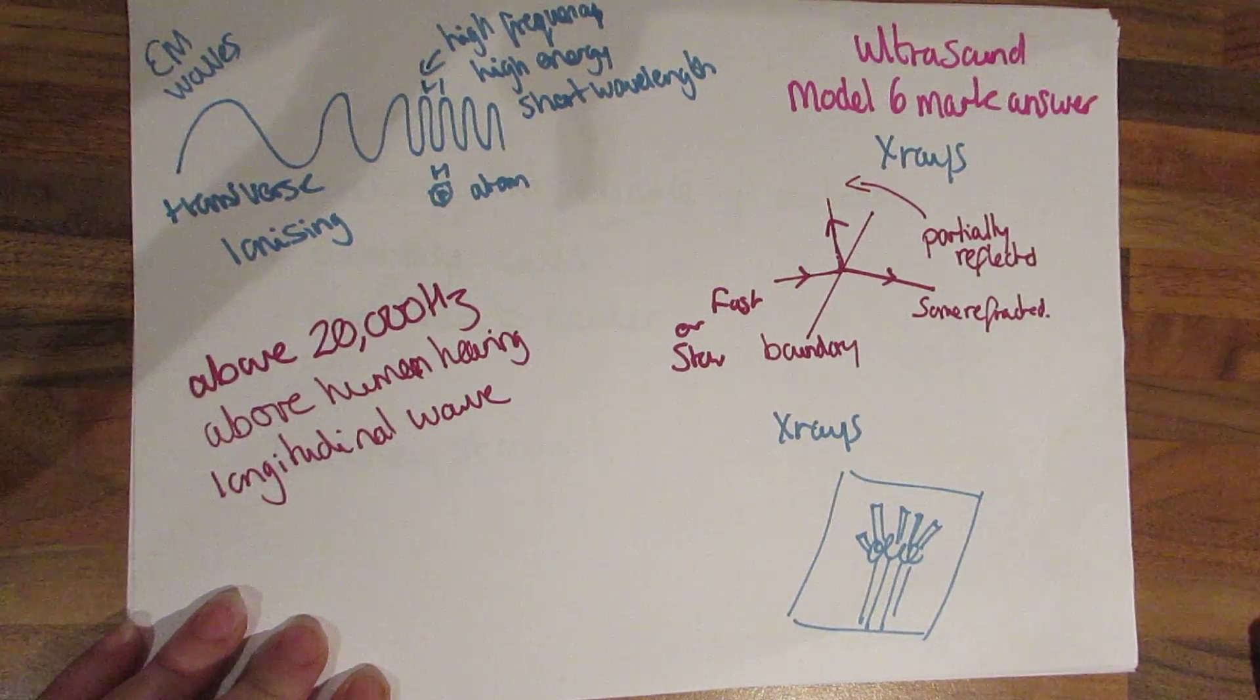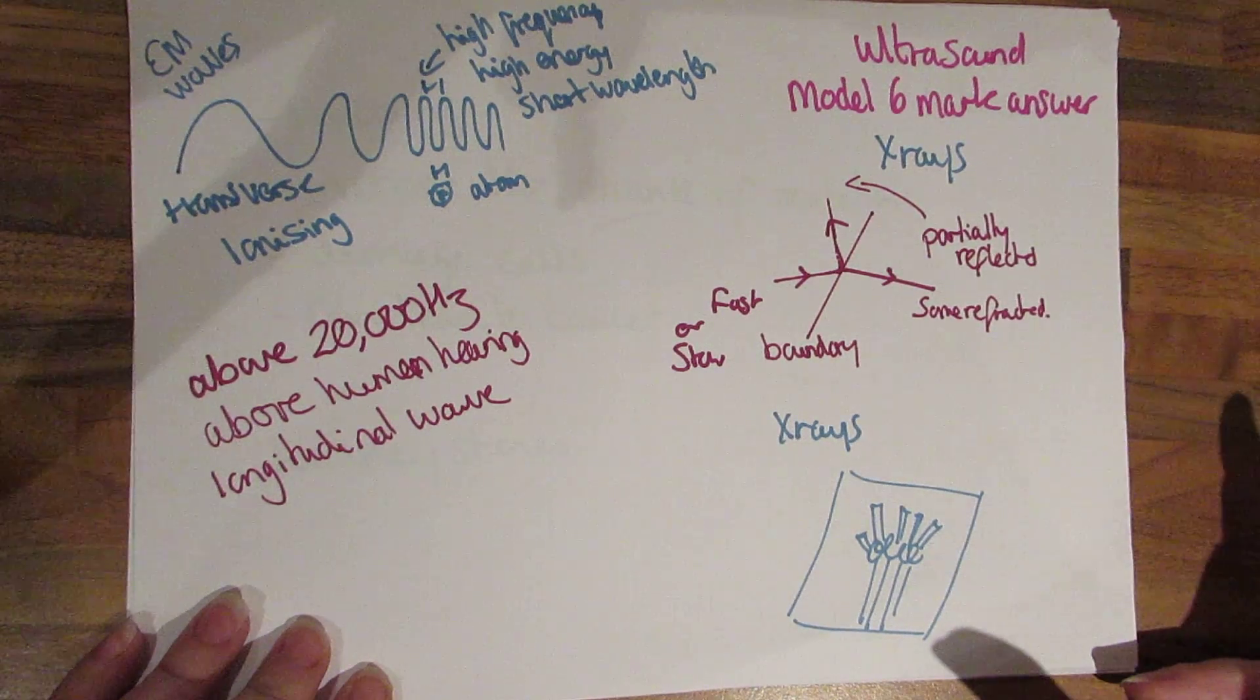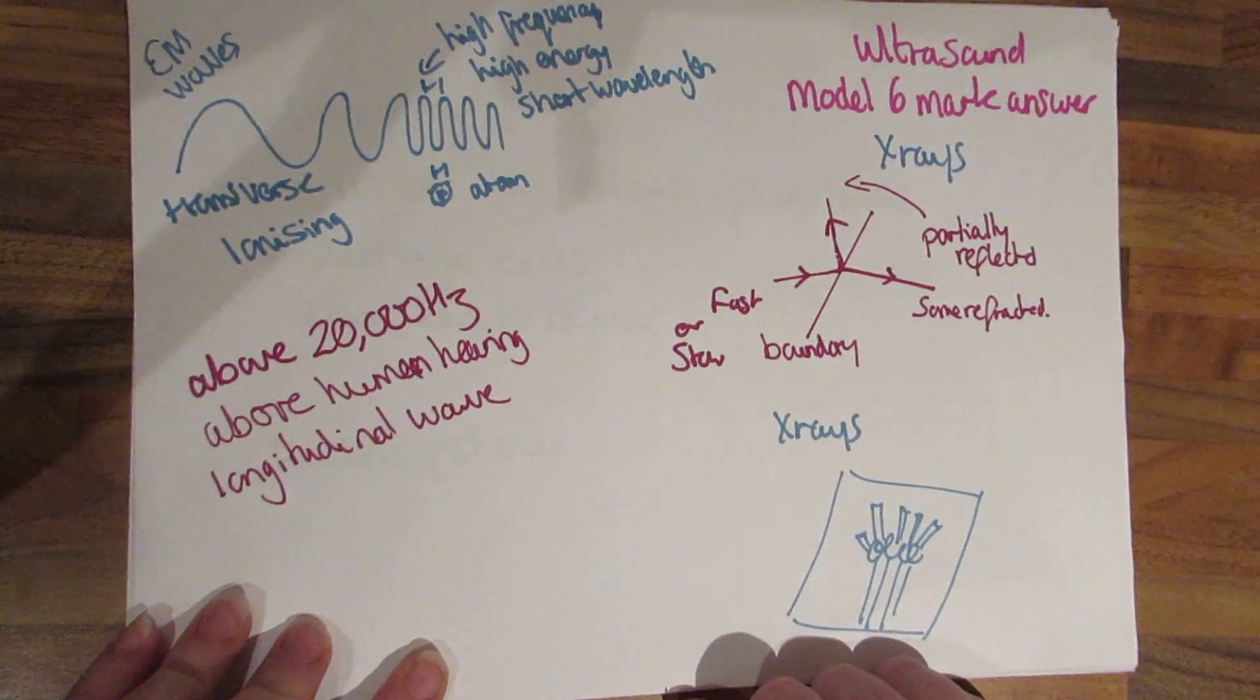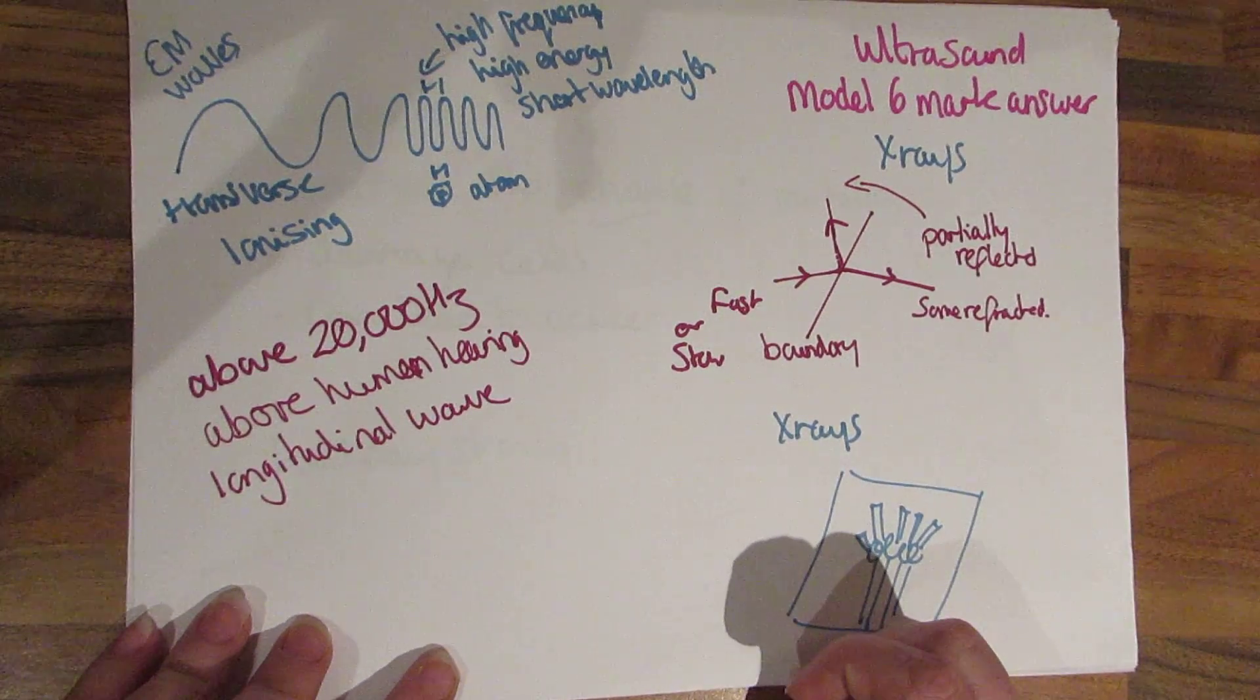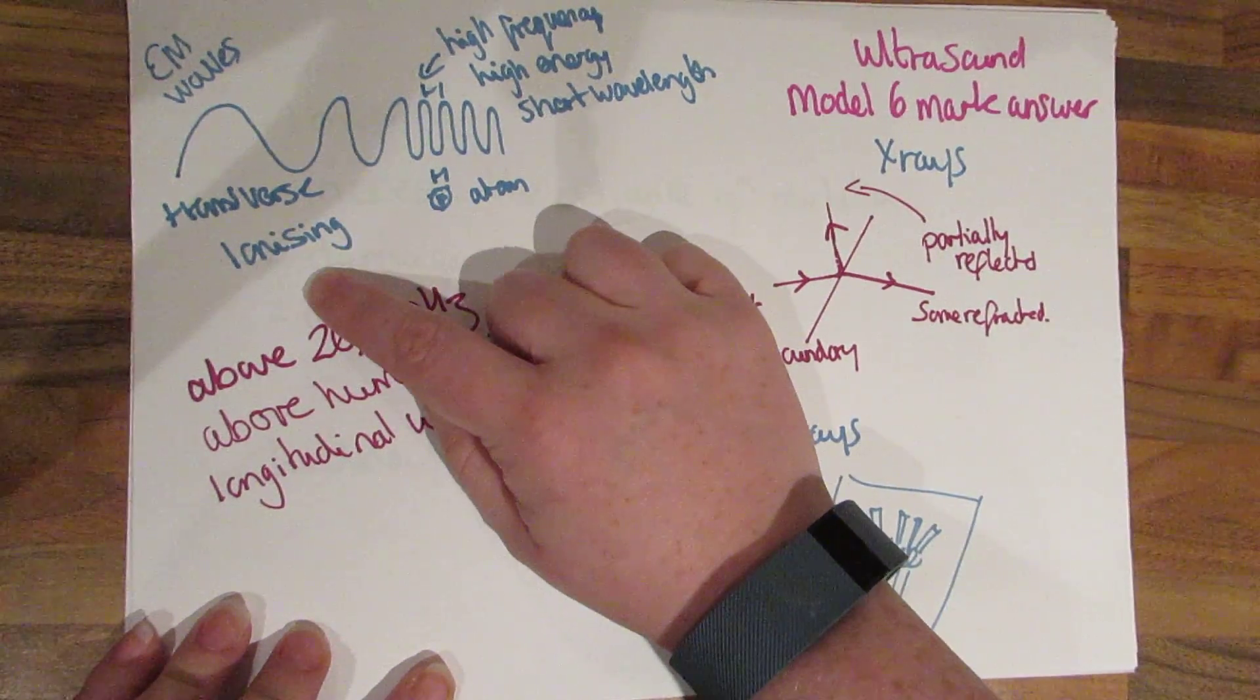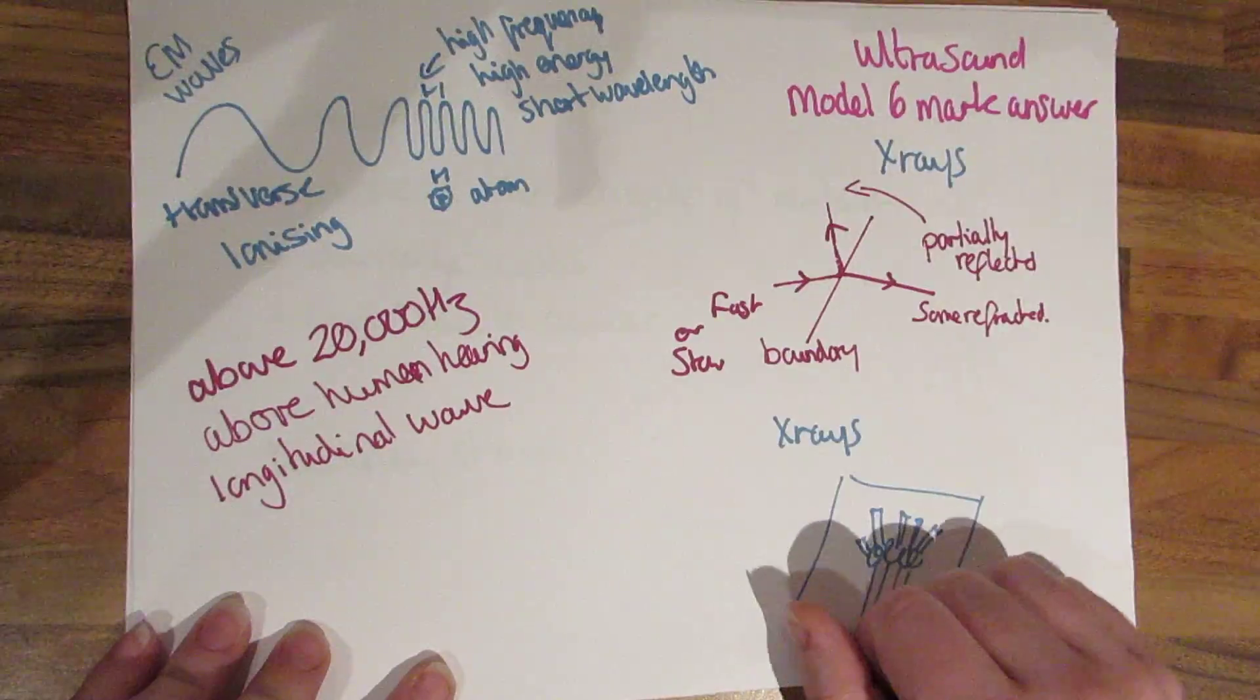So now we move on to some of the actual medical applications of physics here. This is about ultrasound and x-rays. So up here we have x-rays, you need to know that they are electromagnetic waves, they are transverse waves which are very ionizing. They are high frequency, high energy and have a short wavelength.